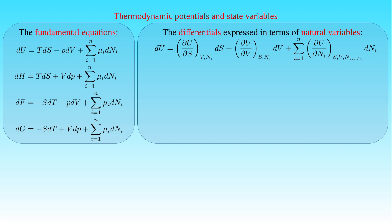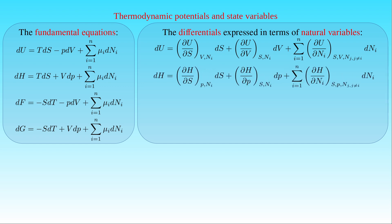By considering the second fundamental equation, we see that the natural variables of the enthalpy H are the entropy S, the pressure P, and the number of particles Nᵢ. The differential of H can be written as the partial derivative of H with respect to S at constant P and Nᵢ times dS, plus the partial derivative of H with respect to P at constant S and Nᵢ times dP, plus the sum of the partial derivative of H with respect to Nᵢ at constant S, P, and Nⱼ where j ≠ i, times dNᵢ.